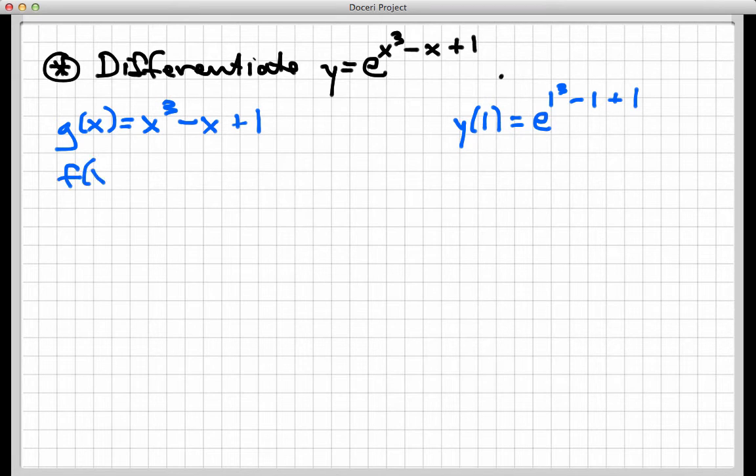And the f function, the outside, or second function, was e to the x. I'm gonna erase my little sketch writing here. And now, if I have that composition, I'm gonna be using the chain rule.